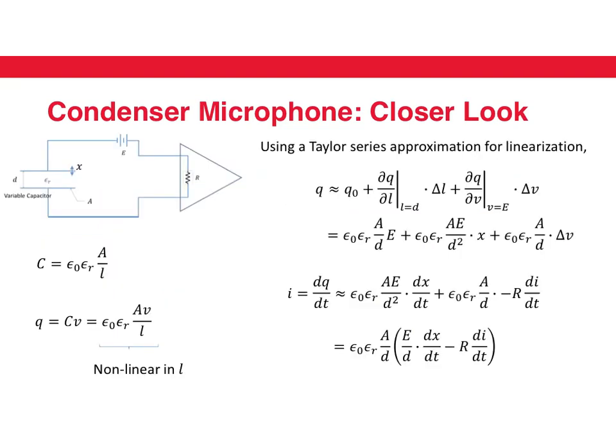Let's just take a closer look at the condenser microphone. The capacitance is given by this equation as we have already seen. Now the charge on the capacitor is going to be given by C into V, where V is the voltage on the capacitor. Now this equation is nonlinear in L. We want to make it linear in L because L is the quantity that is changing, and the capacitance is changing as a response to the change in distance between the two plates.